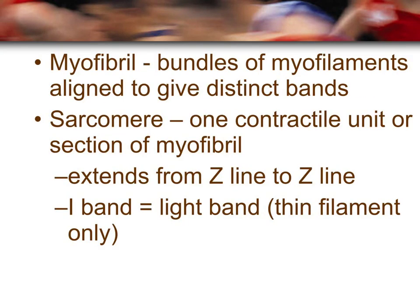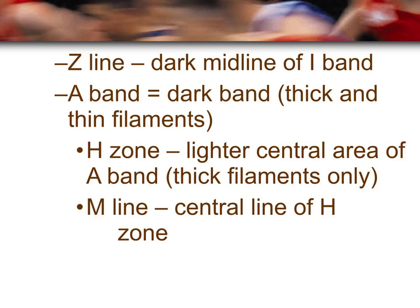Myofibrils are smaller structures that make up the muscle fiber, and bundles of myofilaments make up a myofibril. The arrangement of myofilaments gives a distinct pattern to the myofibril. Each section of a myofibril from Z-line to Z-line is called a sarcomere. The I-band is formed by layers of thin filaments only. The Z-line is the dark midline of the I-band. The A-band, which makes up the dark band in a striation, is made up of both thick and thin filaments — it's darker because two filaments overlap.